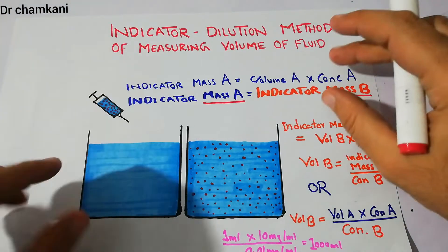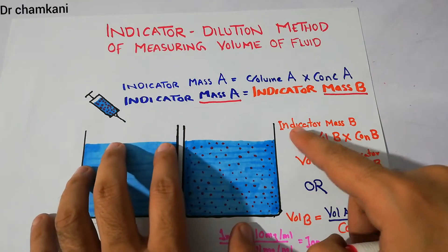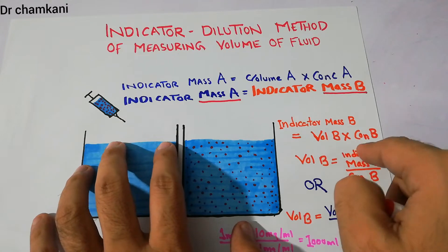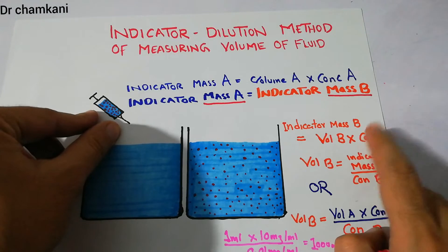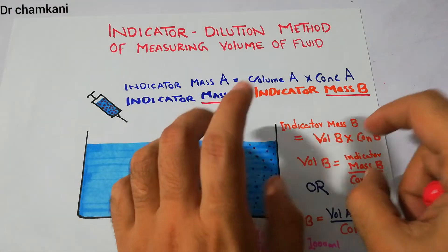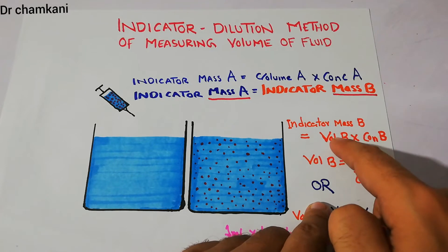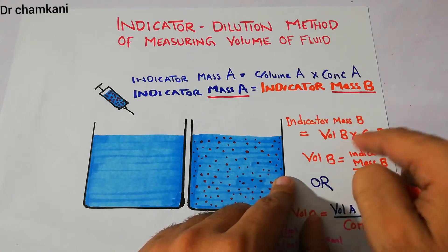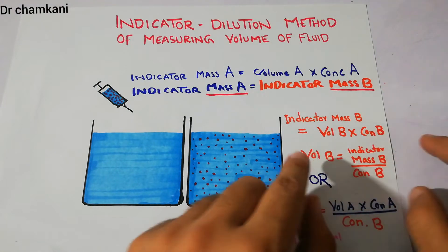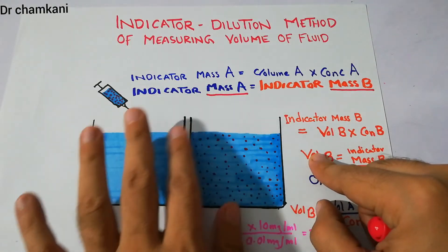Once this indicator has been put into the fluid, we want to determine the volume of this fluid. We can say that mass B equals volume B times concentration B. Mathematically, we can shuffle this equation: mass equals volume times concentration, so volume equals mass divided by concentration. We are more interested in the volume of this fluid, so we rearrange to determine volume B.